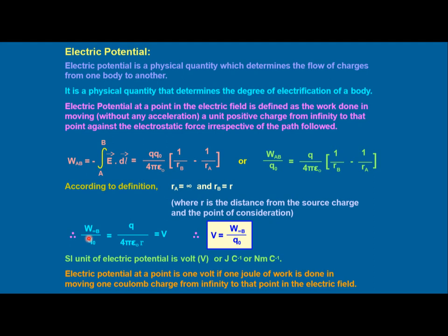Potential has a very broad sense and can be used in several forms, but here we are focused only on electric potential. Electric potential is the quantity responsible for the flow of charge, and electric potential energy per unit charge is called electric potential. Electric potential is the physical quantity which determines the flow of charge from one body to another and determines the degree of electrification of a body. Electric potential at a point in the electric field is defined as the work done in moving a unit positive charge from infinity to that particular point.